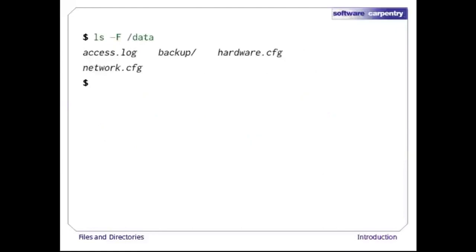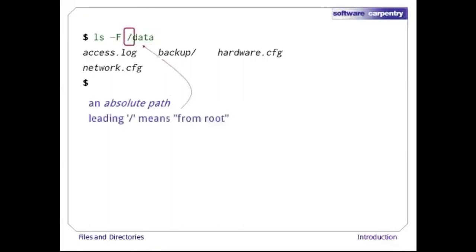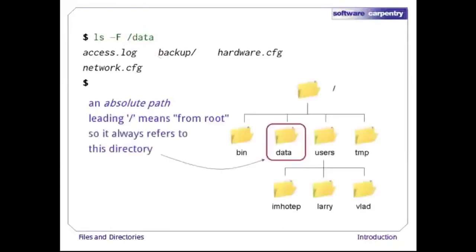If we run 'ls -F /data', we get a different answer, because /data is an absolute path. The leading slash tells the computer to follow the path from the root of the file system, so it always refers to exactly one directory, no matter where we are when we run the command.